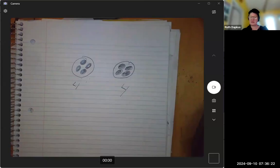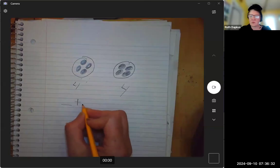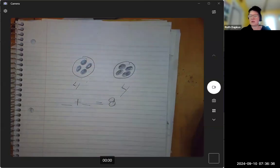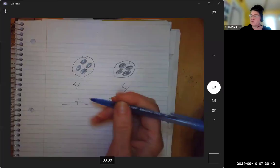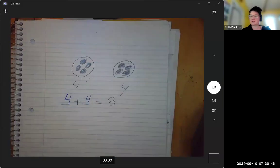Can we write a repeated addition sentence and a multiplication sentence for this picture? Yeah, I think we can. So we're going to be writing, what plus what equals eight? Well, we have four in each group, right? So it's easy to write an addition sentence. We know that four plus four equals eight.